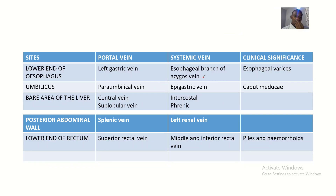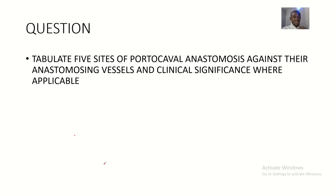Good day. We'll be talking about portocaval anastomosis in a special way, using mnemonics to understand it. The question is: tabulate five sites of portocaval anastomosis against the anastomosing vessels and their clinical significance.